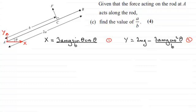OK, welcome back then if you had a go. Now the answer for A over B is two thirds. If you've got that, well done, because it is quite tricky. How do we do it? Well, we're told that the force acting on the rod at A acts along the rod. So let's just put that resultant force in. Let's say we call it P.